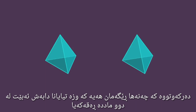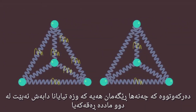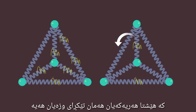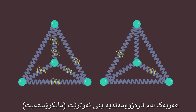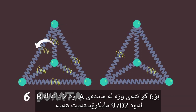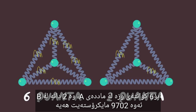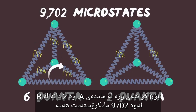It turns out that there are numerous ways that the energy can be distributed in the two solids and still have the same total energy in each. Each of these options is called a microstate. For six quanta of energy in solid A and two in solid B, there are 9,702 microstates.